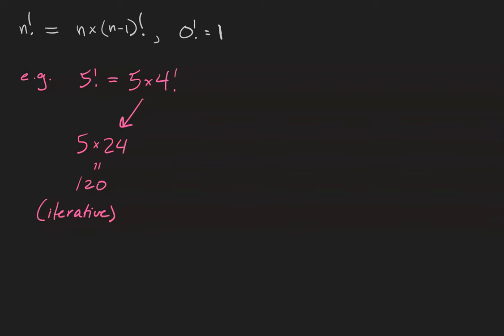Let's say we didn't store the value of 4 factorial. Then we can unpack 4 factorial. It's 5 times 4 times 3 factorial using the recursive definition. That equals 5 times 4 times 3 times 2 factorial, which equals 5 times 4 times 3 times 2 times 1 factorial.